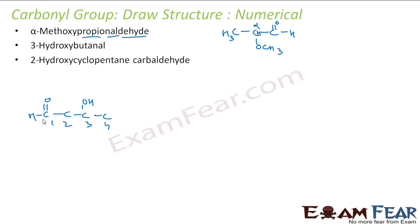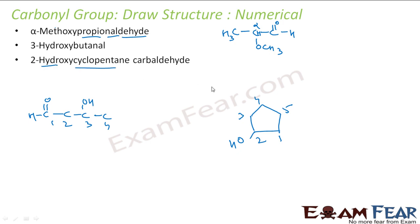The next is 2-hydroxycyclopentane carbaldehyde. So let me first draw a cyclopentane and number it: 1, 2, 3, 4, 5. At 2, I have a hydroxy — done. 2-hydroxy is done. Cyclopentane carbaldehyde — carbaldehyde means at 1, I should have a carbaldehyde. This is my structure.